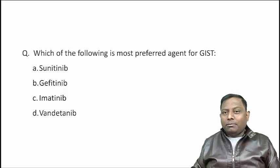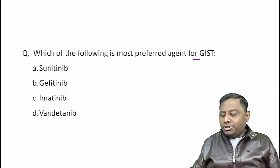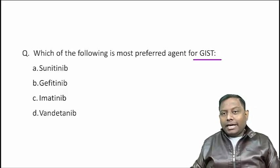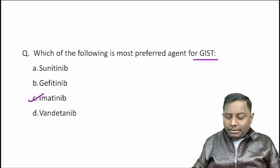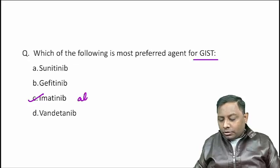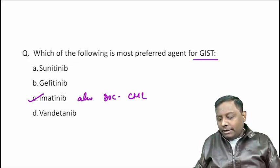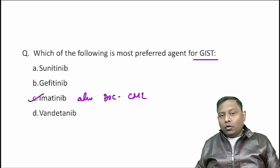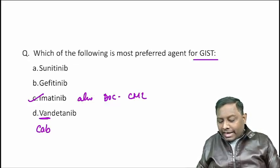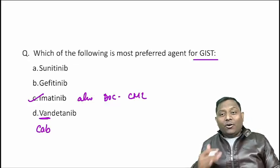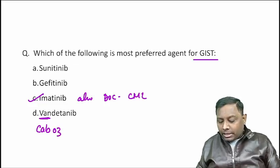Last question: which is the most preferred drug for GIST — gastrointestinal stromal tumour? The answer is imatinib mesylate, which is also the drug of choice for CML. A mnemonic to remember: Vandetanib and Cabozantinib (van or cab) — we take a van or cab to get to the middle of the city.